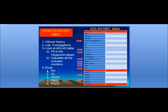There are four items. First, listen carefully to the clinical history. Second, study the lab investigations including the ABG chart. Third, look at the AGLAN ABG table to fill in the spaces — measured and calculated. Fourth, go back to the AGLAN ABG table to study pH, chloride items, bicarbonate items, oxygenation state of the lung, and ventilation state of the lung.